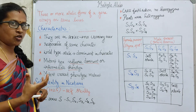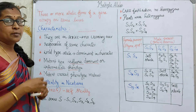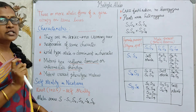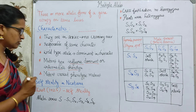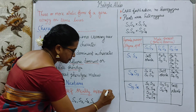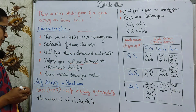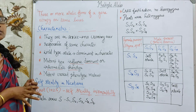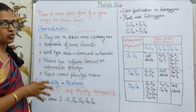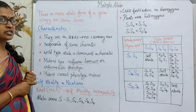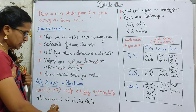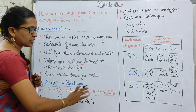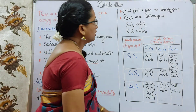Regarding multiple alleles, we have the example of self-sterility in Nicotiana. Multiple alleles are also responsible for self-sterility, also called self-incompatibility. A scientist named East, in 1925, observed this multiple allele self-sterility condition in Nicotiana. He explained that the allelic series are expressed using the letter S, with a set of allelic series from S1 to S5: S1, S2, S3, S4, and S5.